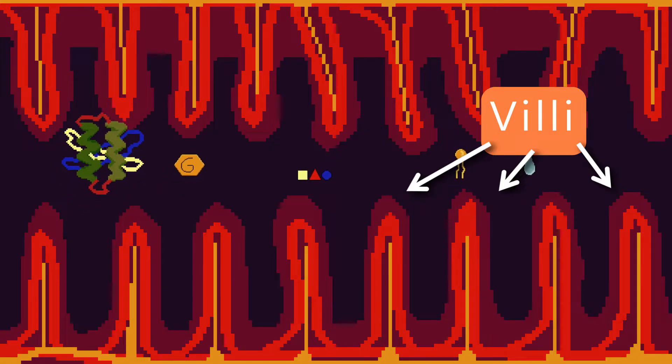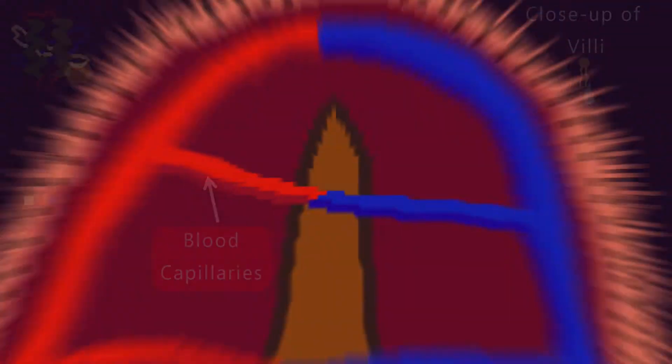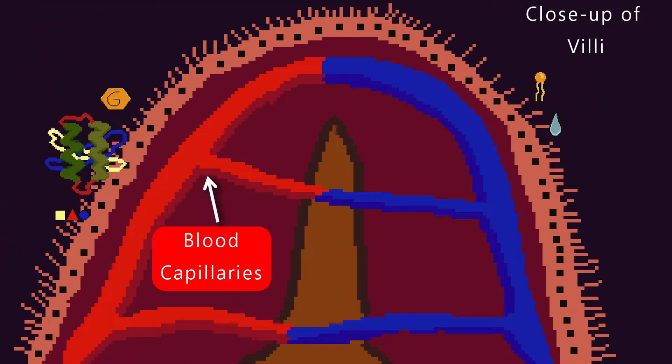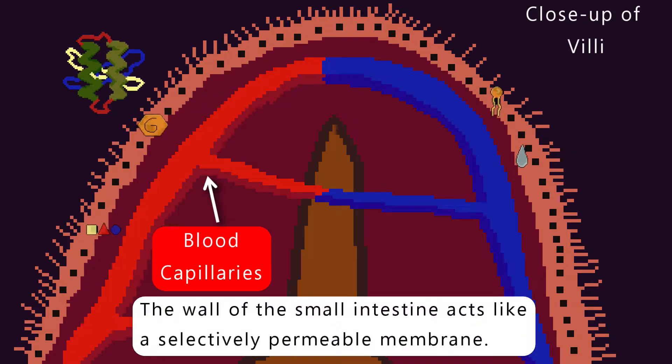Only the smaller soluble molecules can diffuse through the small intestinal wall and into the bloodstream by diffusion. The wall of the small intestine acts like a semi-permeable membrane.